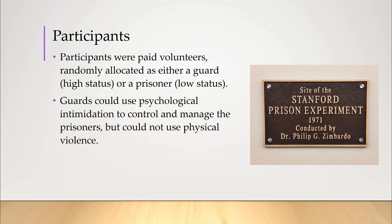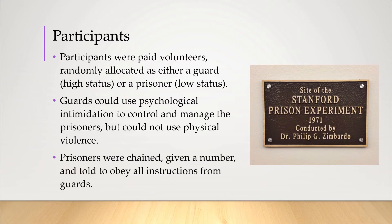The guards were given military-style uniforms and reflective sunglasses to disguise their individuality, and were told to impose their will on the prisoners using psychological intimidation. They were in full control of the prisoners but could not physically hurt them. The prisoners were given smocks to wear, no underwear, and a chain around their ankles. They were told to obey all instructions from the guards and could only refer to themselves by their prison number, not their name.